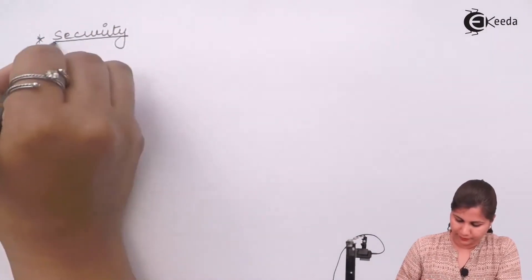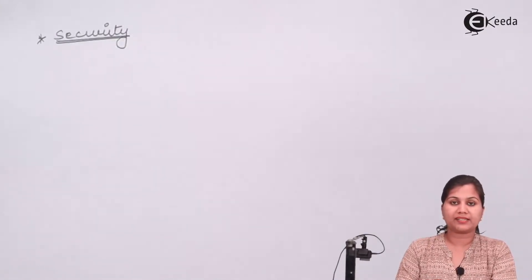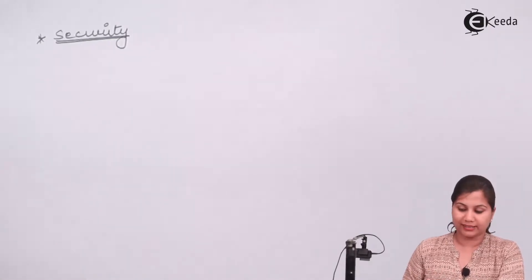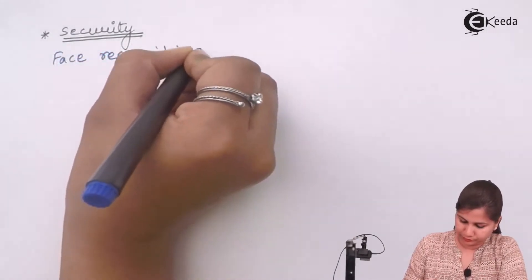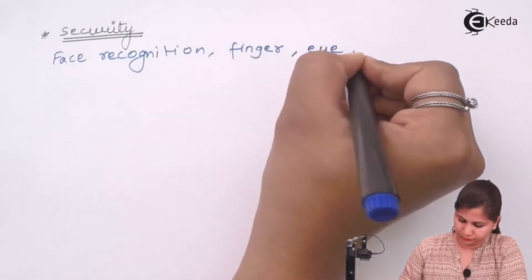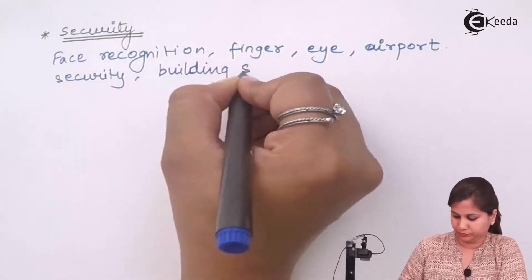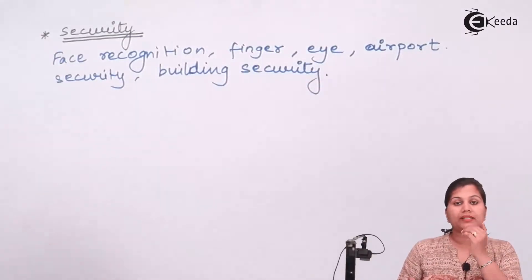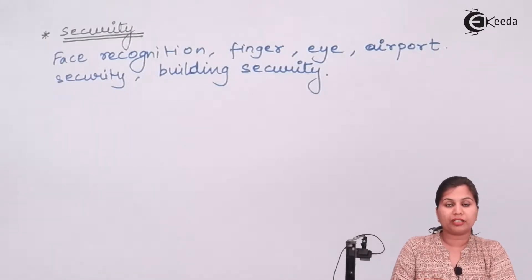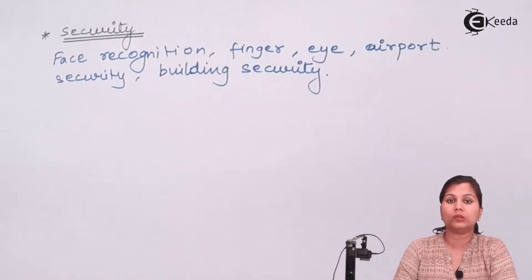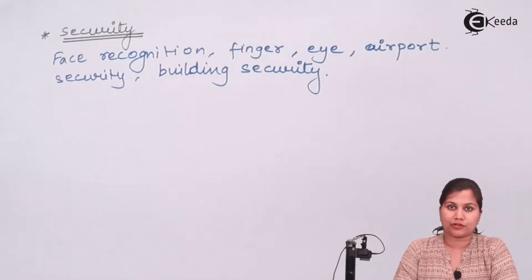In the security area, we have seen that home and office security systems use embedded systems. Beyond these, in security systems like face recognition, fingerprint recognition, and eye recognition systems, and in the security systems of airports, buildings, and houses, embedded systems are finding their applications.